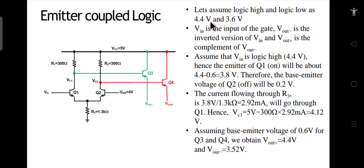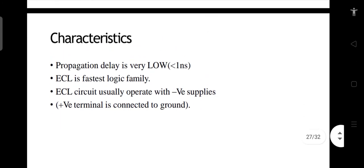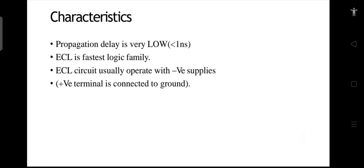This was the reason we chose the high and low voltages so close to each other — because this particular ECL arrangement provides exactly those voltage levels. The two emitters are coupled together, which is why it is called emitter coupled logic. This was the working principle of emitter coupled logic.